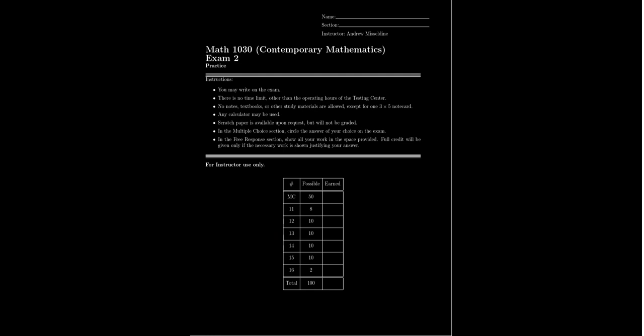Exam two covers topics from lessons 9 through 16. Lessons 9 through 12 were about scheduling — projects with various tasks where we assign processors to finish tasks efficiently, constrained by precedence relations. We used digraphs in this unit, making it a continuation of the graph theory from exam one, specialized to the problem of scheduling.